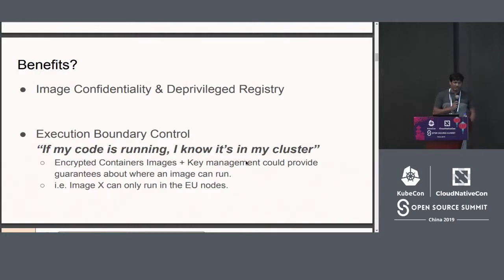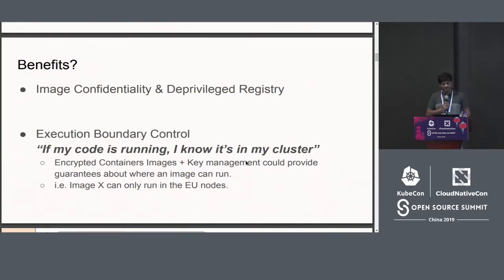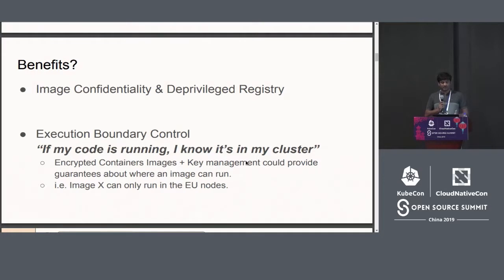Once you bring in encryption, it allows you to do interesting things — for example, you can sign container images with a target system's public key in such a way that you can enforce that the images you're building will run only in specific geographies. For example, you can say a particular image will only run inside the European Union's geographic borders.